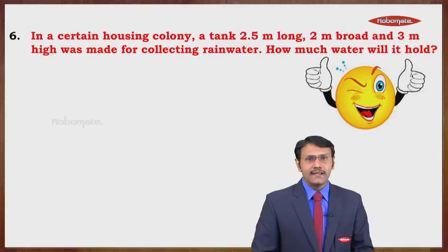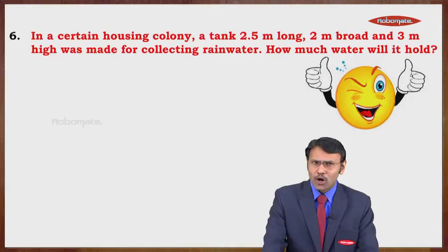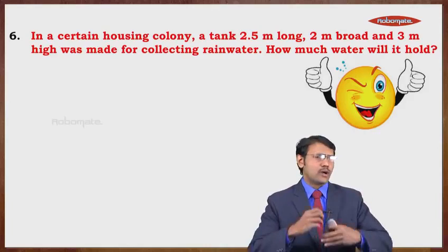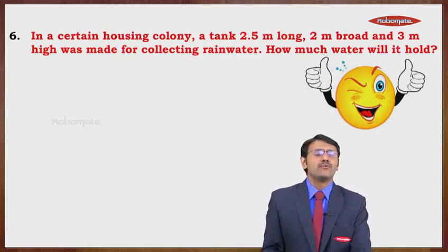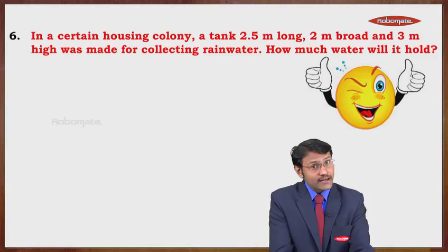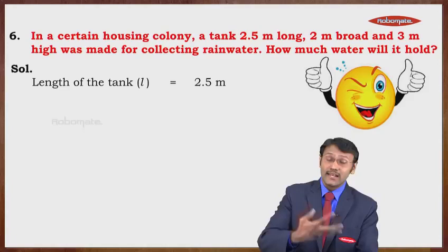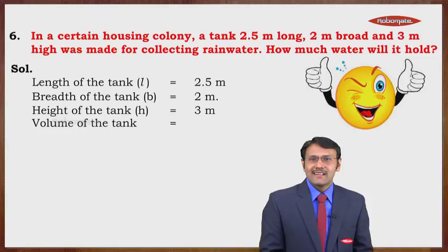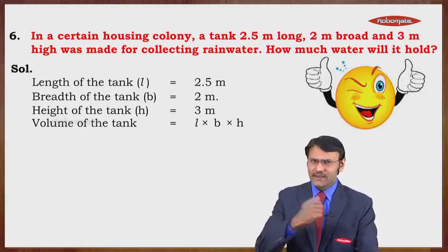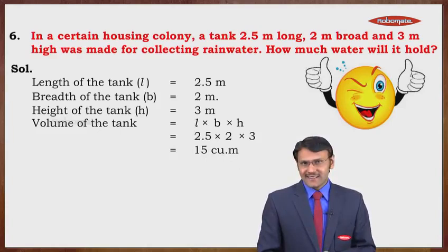In a certain housing colony, a tank 2.5 meters long, 2 meters broad, and 3 meters high was made for collecting rain water. How much water will it hold? We need to find the volume of the cuboid-shaped tank. Volume = L × B × H = 2.5 × 2 × 3 = 15 cubic meters.